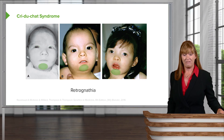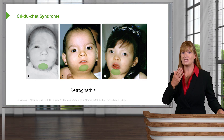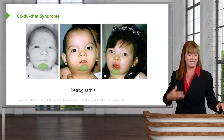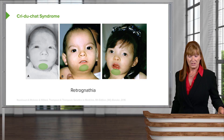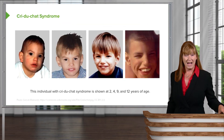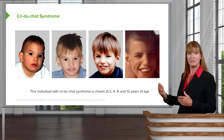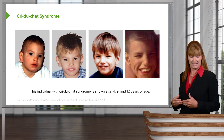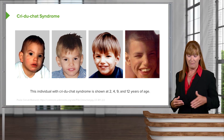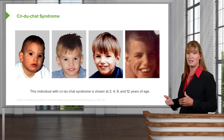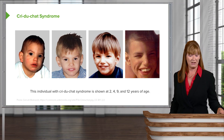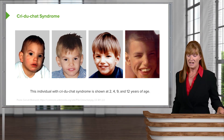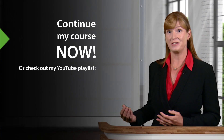Another significant feature is retrognathia, which is a smaller and receding chin. Here is a sequence of images showing the development of Cri du chat — a classical representation tracing the same individual as a four-year-old, nine-year-old, and twelve-year-old. You can see the general features of this syndrome progress over time.